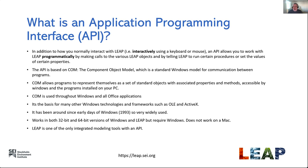First, let's think about what is an Application Programming Interface. In addition to how you normally interact with LEAP interactively using a keyboard or mouse, an API allows you to work with LEAP programmatically by making calls to the various LEAP objects and telling LEAP to run certain procedures or set the values of certain properties. The API in LEAP is based on COM, the Component Object Model, which is a standard Windows model for communication between programs. COM allows programs to represent themselves as a set of standard objects with associated properties and methods accessible by Windows and programs installed on your PC. COM is used throughout Windows and all Office applications including Word, Excel, and PowerPoint, and is the basis for many other Windows technologies such as OLE and ActiveX.